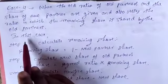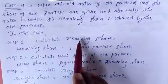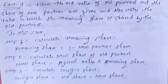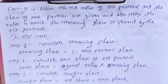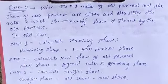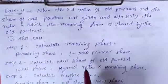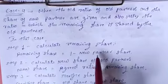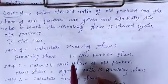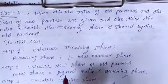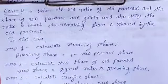Step 1: Calculate the remaining share. How to calculate the remaining share is already covered in the NPSR. Remaining share equals 1 minus new partner share. The formula to calculate the remaining share is 1 minus new partner share.